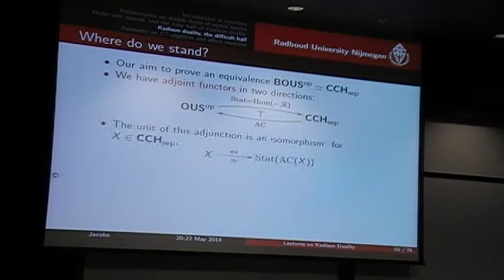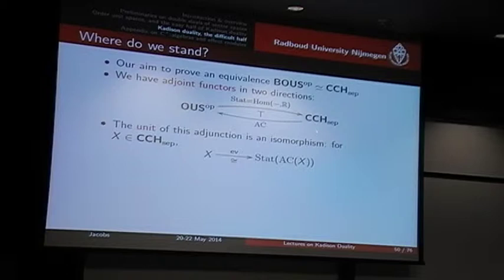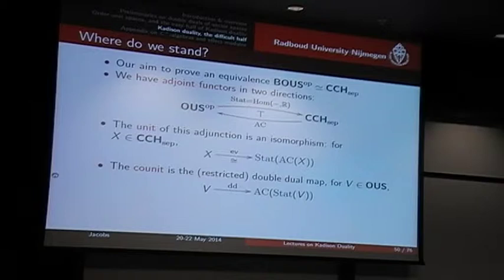We've seen that the unit of this adjunction — that is, starting from our convex compact space — we've got an isomorphism with this construction. That means going this way around, you get basically the same space back. And the aim is now to do the same thing here, and get that amounts to showing that the co-unit of this adjunction is also an isomorphism.